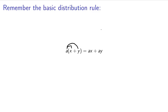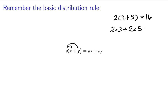Just as a quick example: if we have 2 times 3 plus 5, well, 3 plus 5 is 8, and 8 times 2 is 16. But if we have 2 times 3 and 2 times 5, that's 6 plus 10, which is also 16. So remember, that's what the basic distribution rule is — it says that doing it in this order is the same thing as doing it in this order.